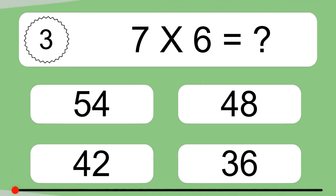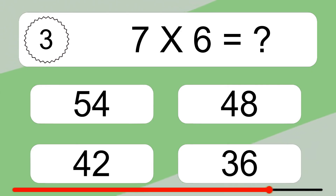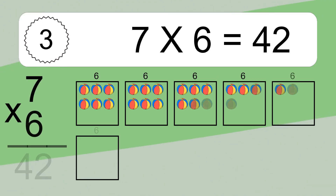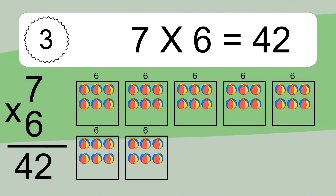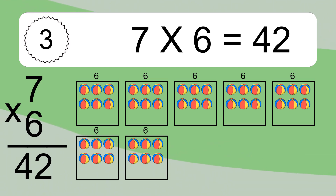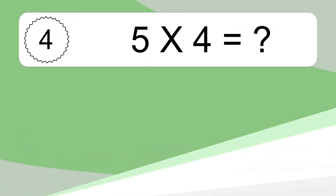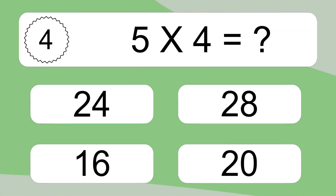7 times 6 equals what? 7 times 6 equals 42. We have 7 boxes, and each box has 6 colorful balls inside. If you count all the balls in all the boxes together, you will have 7 times 6 balls. This equals 42 balls.